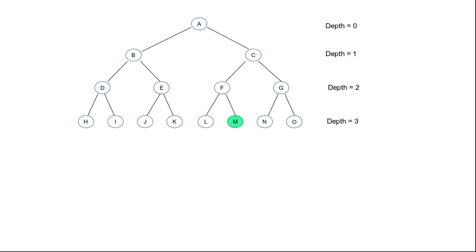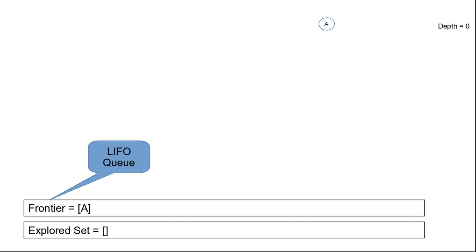To understand DFS, let us take the example of a tree where we have the goal node M, which is at a depth of three. In case of BFS, the frontier list is maintained as a first-in first-out queue. In uniform cost search, the frontier list is maintained as a priority queue ordered on path cost. And here in case of DFS, the frontier list is maintained as a last-in first-out queue.